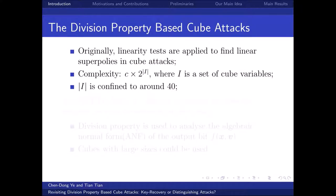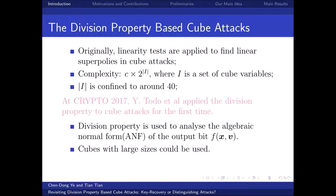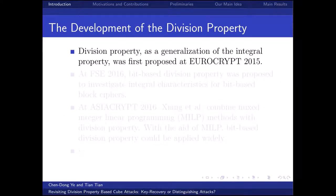Originally, linear tests are applied to find linear superpolys in cube attacks. However, the computing complexity increases exponentially as the size of I increases. Generally, the size of I is confined to 40. At Crypto 2017, Todo and other researchers applied the division property to cube attacks for the first time, making a breakthrough. The main idea is using division property to analyze the algebraic normal form of the output bit, so cubes with large sizes could be used. Division property, as a generalization of the integral property, was first proposed at EuroCrypt 2015.